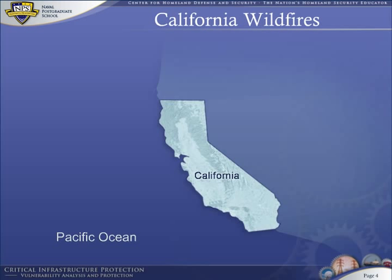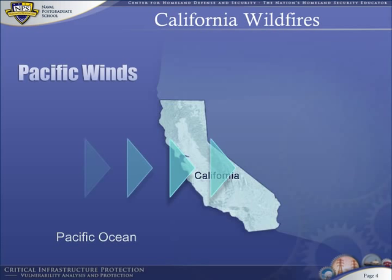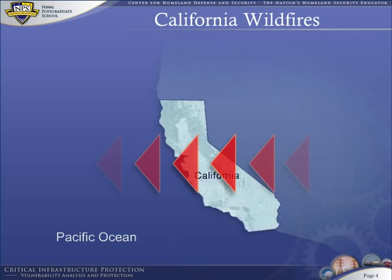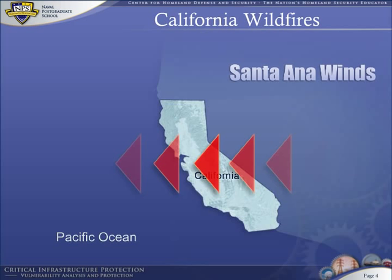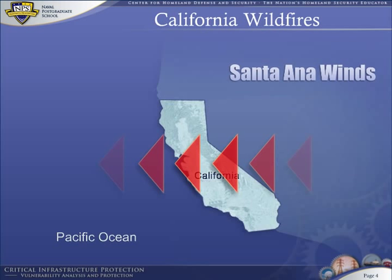During most of the year, California's moderate climate is determined by Pacific Ocean winds that cool the state during the summer. But during the months of September and October, winds reverse themselves, flowing from the Sierra Mountains out to sea. These are called Santa Ana winds, and they raise the temperature as they flow from east to west. Santa Ana winds make October the warmest month of the year, and in some years temperatures in Southern California rise to triple digits.